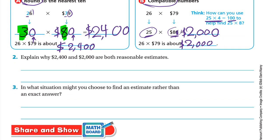In what situation might you choose to find an estimate rather than an exact answer? We use estimation when we want to calculate something quickly or when we don't need the exact answer. For example, if you have a party and you need some cakes, you estimate about how many pieces of cake you will need.